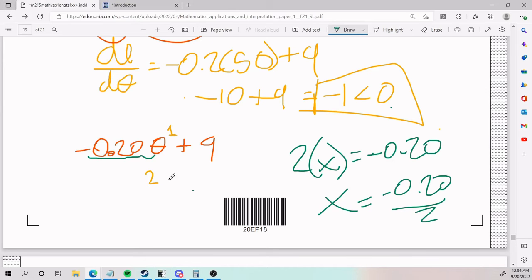Negative 0.2 divided by 2, negative 0.1. So negative 0.1 is what was originally in front of the θ. That is my first term.